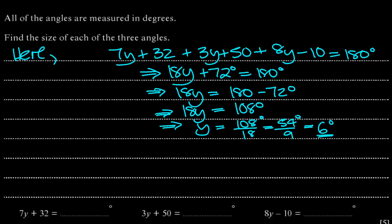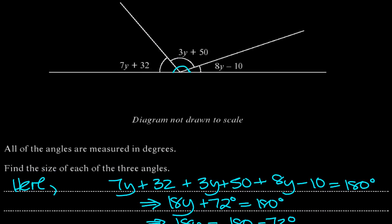So we now need to find the angles of the three parts in question. So y is 6. This one is 7 times 6 plus 32. This one is 3 times 6 plus 50. And this is 8 times 6 minus 10.